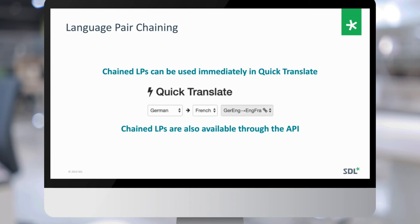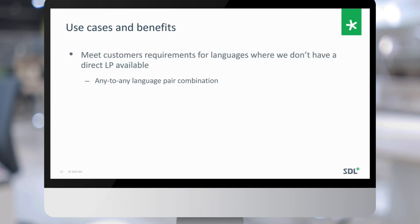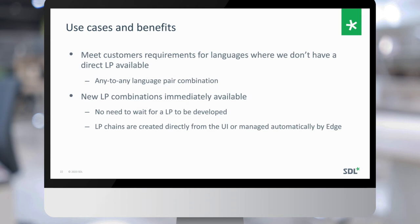The use cases and benefits of chain language pairs include meeting customer requirements for languages where no direct language pair is available. Historically, most machine translation language pairs have English somewhere as either source or target. With chaining, we allow any-to-any language pair combination, available immediately — you don't need to wait for a language pair to be developed by us. This feature is available today on MT Edge and coming soon to MT Cloud.